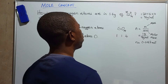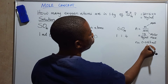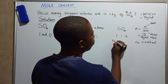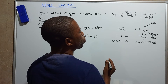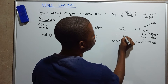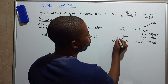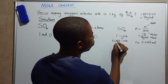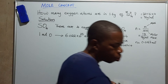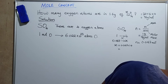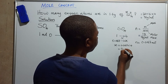Now, using the mole-to-mole relationship, we have 0.0167 moles of sulfur trioxide. Since there are 4 moles of oxygen for every 1 mole of sulfur trioxide, we cross-multiply: moles of oxygen equals 0.0167 times 4, which gives us approximately 0.0667 moles of oxygen.